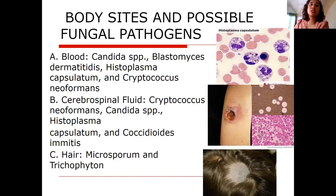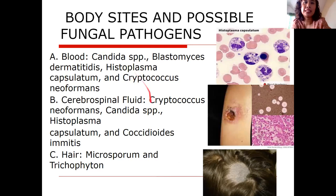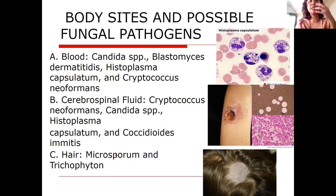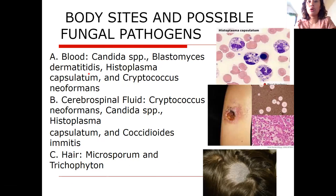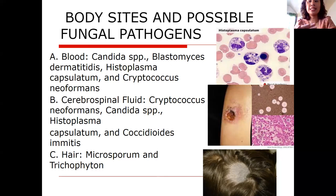Based on the body site or specimen, here are the possible fungal pathogens. In blood: Candida species (e.g., Candida albicans), Blastomyces dermatitidis, Histoplasma capsulatum, and Cryptococcus neoformans. Mycosis refers to diseases caused by fungal etiologic agents. In CSF: Cryptococcus neoformans, Candida, Histoplasma capsulatum, and Coccidioides immitis. These pathogens may start in the lungs and disseminate via the blood into the CSF.